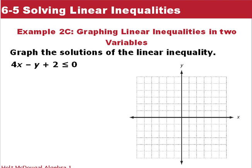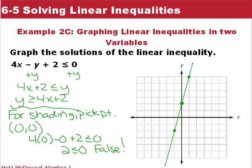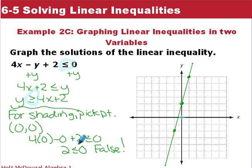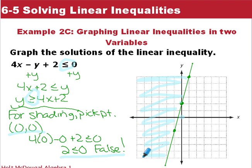In the third example, we add y to both sides to get y ≤ 4x + 2. Our y-intercept is at positive 2, slope is positive 4 over 1. It's a solid line because it's greater than or equal to. Picking the point (0, 0): 4(0) − 0 + 2 ≥ 0 gives 2 ≤ 0, which is false. So (0, 0) is not part of our solution — we shade on the other side of the boundary line.